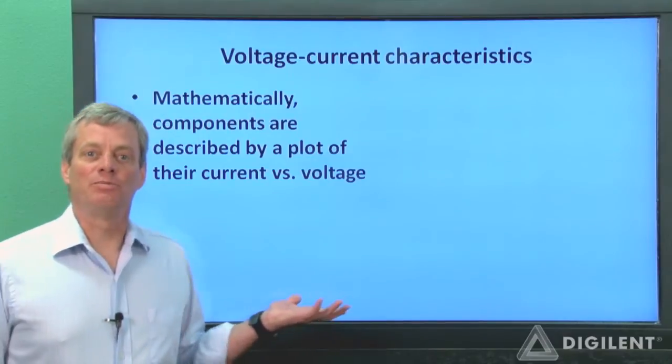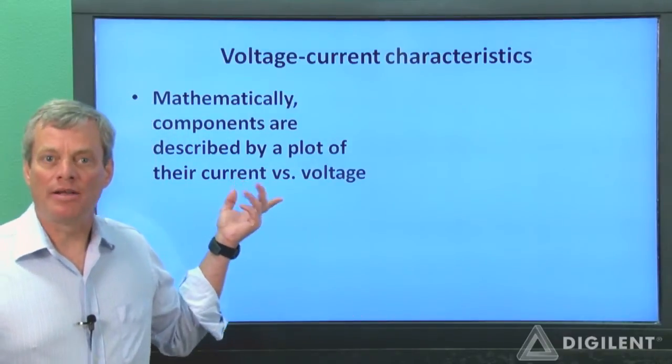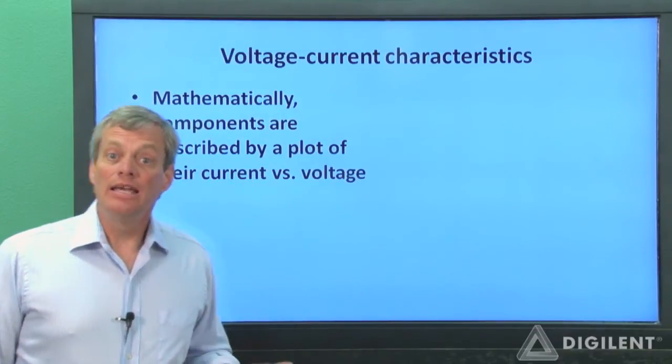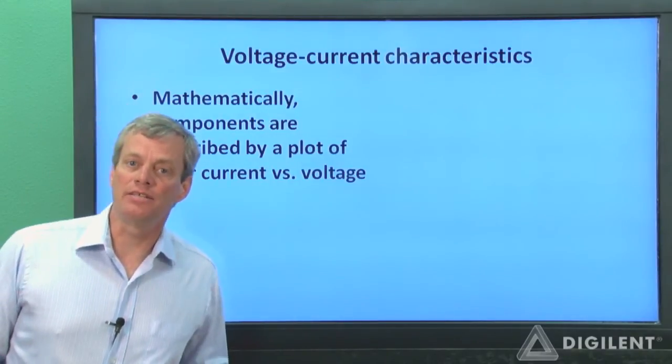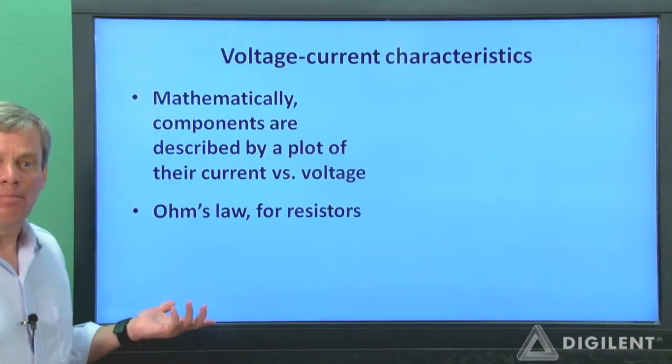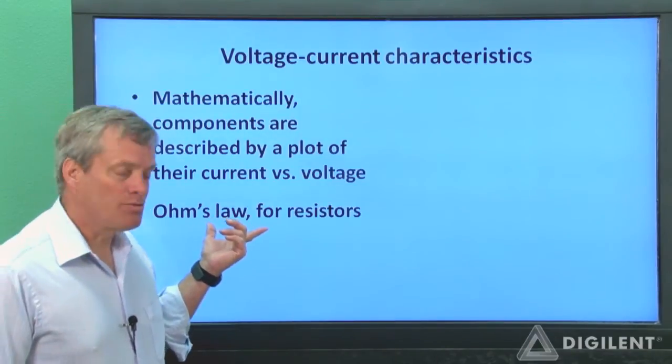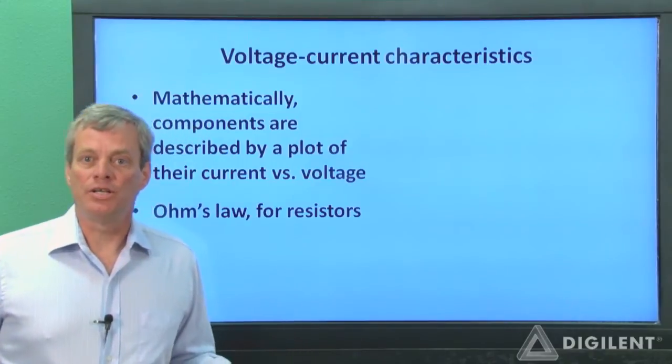Voltage-current relationships are used to create mathematical models of circuit components. Engineers then use these relationships to design and analyze electrical circuits containing these components. An example of a voltage-current relationship is Ohm's law, which we used in the fourth scope tutorial project.